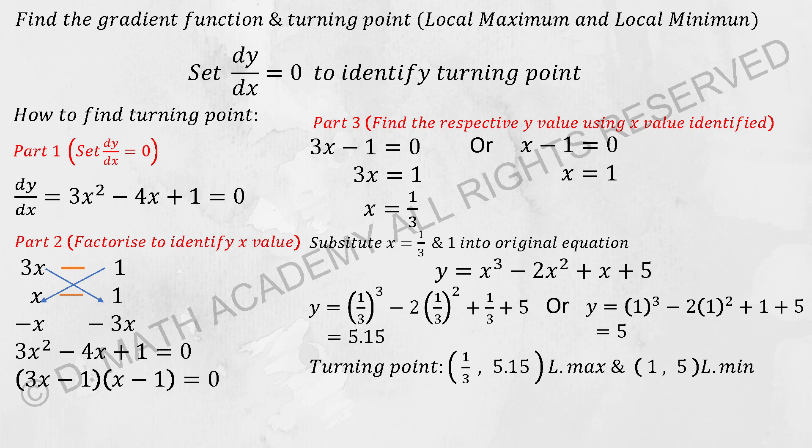The turning point will also be known as the local maximum and local minimum coordinate. For part one, since I set it equals to 0, then I factorize it. I get 3x minus 1 and x minus 1. So the x value can be 1 over 3 or 1.